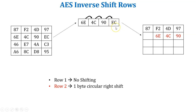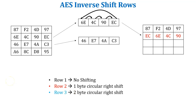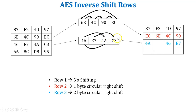Next rule is row three: perform two byte circular right shift. Let's start with the first value 46 — it performs two byte circular right shift and moves to the third position of the row. Next value is E7 — it performs two byte circular right shift and moves to the last position of the row. Next value is 4A — it performs two byte circular right shift and moves to the first position of the row. And the last value is C3 — it performs two byte circular right shift and moves to the second position of the row.